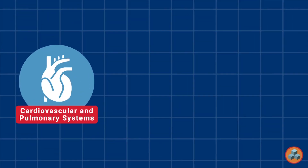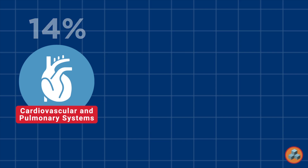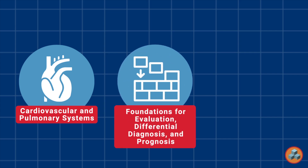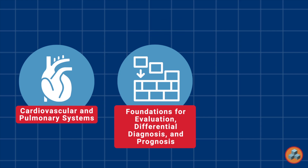System classification: This question is a cardiovascular and pulmonary systems question which represents approximately 14% of all exam items. Content outline classification: This question is the foundations for evaluation, differential diagnosis, and prognosis question which represents approximately 33% of all exam items.